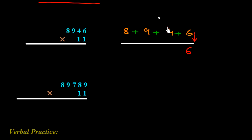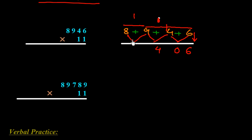We write 6 as it is, then 6 plus 4 is 10, put 0 and carry 1. Then 9 plus 4 is 13, plus 1 is 14, put 4 and carry 1. Then 8 plus 9 is 17, plus 1 is 18, put 8 and carry 1. Then 1 plus 8 is 9. So we get the answer 98406.